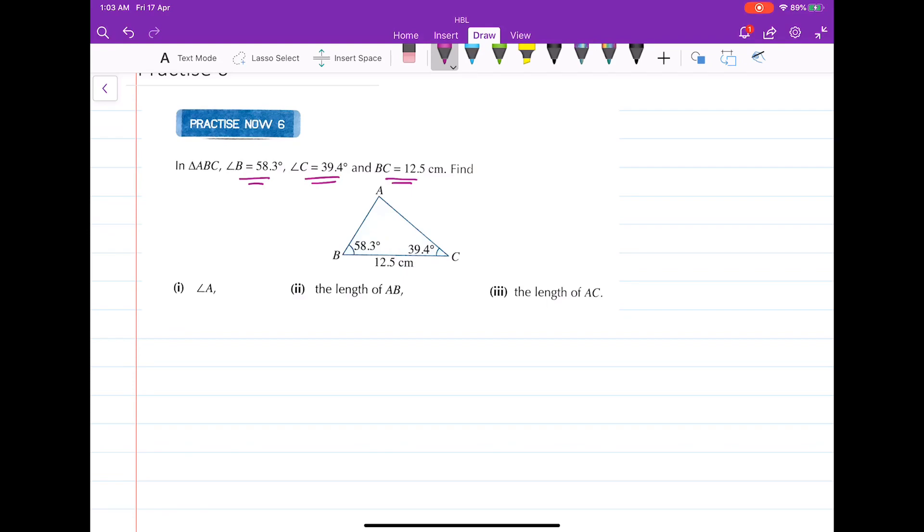The first part of the question involves finding angle A. Now this is easy because we already have angles B and C, so it's just a matter of using angle sum of triangle. So let's find angle A first. Angle A equals 180 degrees minus 58.3 degrees minus 39.4 degrees and you'll get the answer 82.3 degrees.